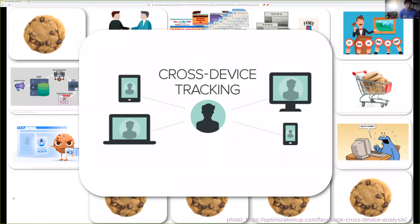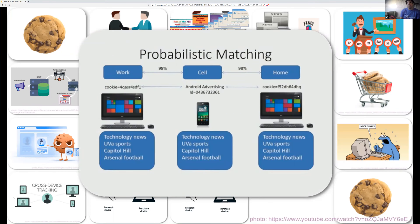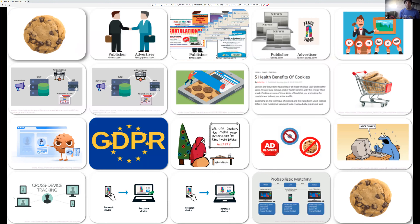Cross-device tracking means knowing that the phone and the computer belong to the same user. When you look at an ad for fancy pants on your phone and then buy the pants on your computer, the system knows you've purchased and stops showing you pants ads on your phone. One way of doing this is deterministically — when you log into Amazon on both your phone and computer, you are the same user. But that doesn't scale across all the other websites you're not logging into, so it becomes probabilistic matching, using large amounts of data, IP addresses, and big data processing to find relevant ads.